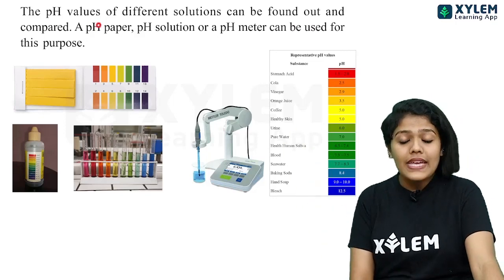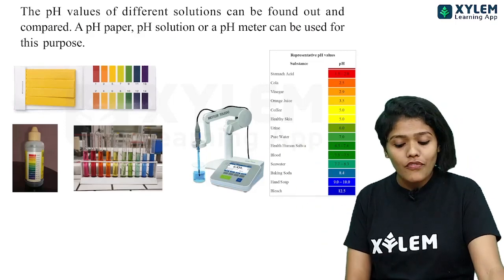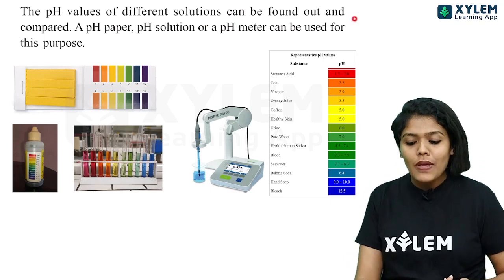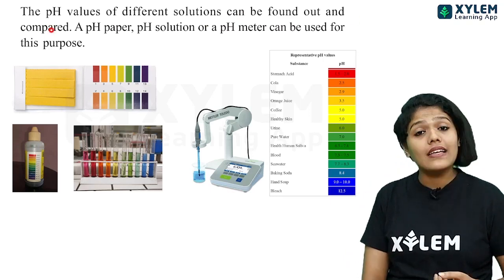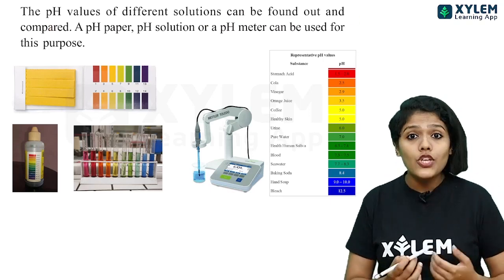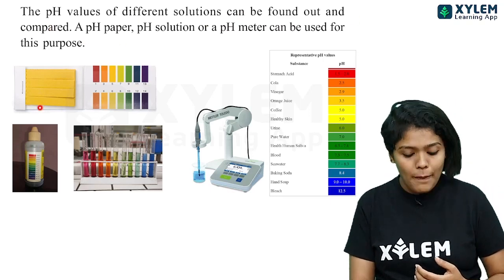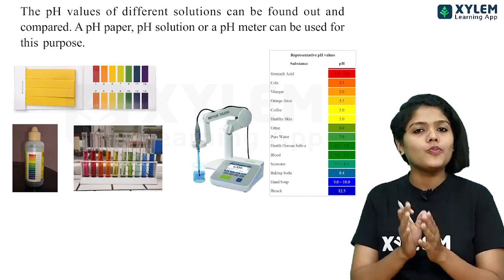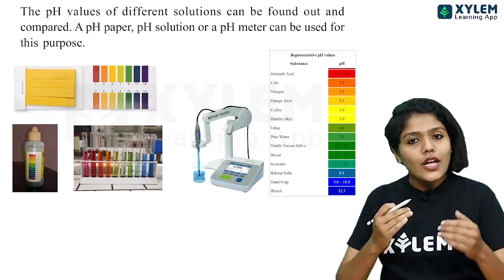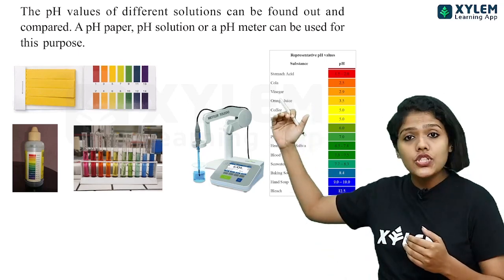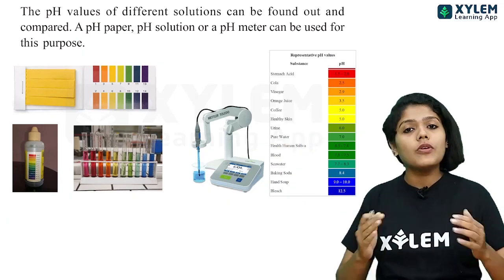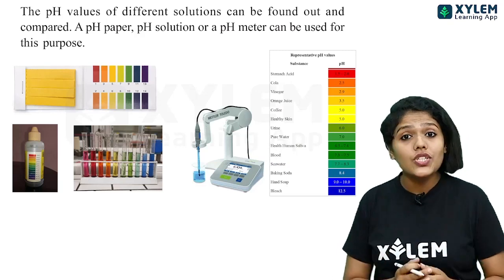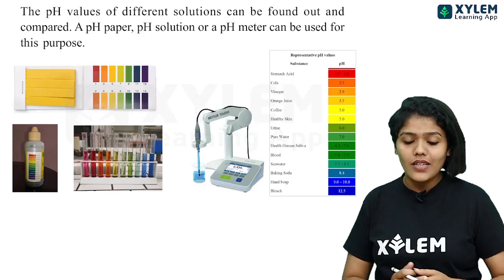The pH values of different solutions or substances can be found out and compared by using pH paper. pH paper comes in strips, and by comparing the color obtained with a color chart, we can determine the nature of the substance — whether it is acidic or basic.